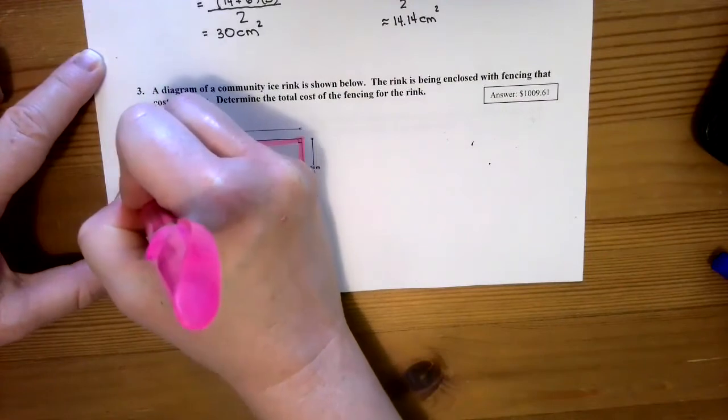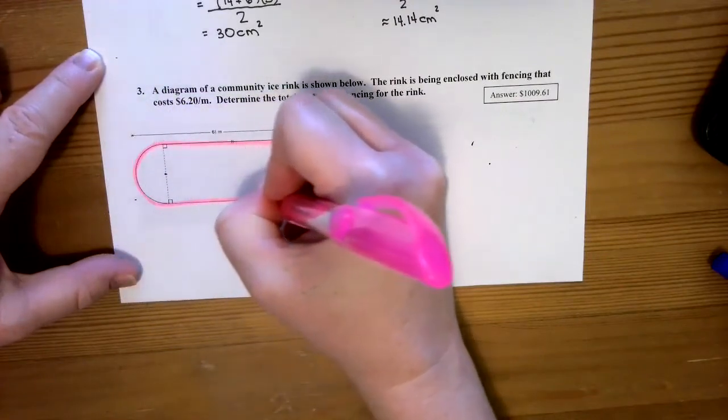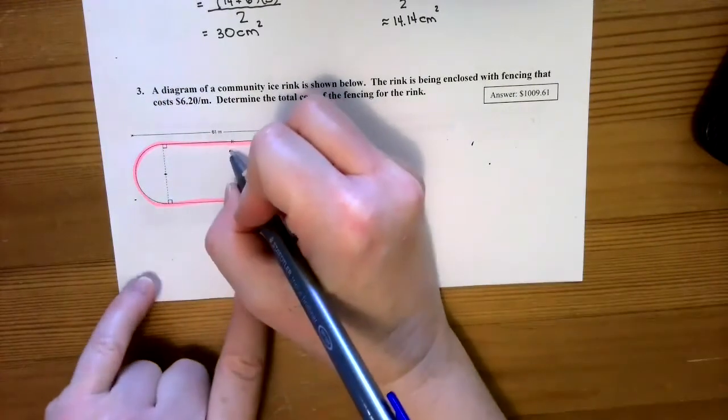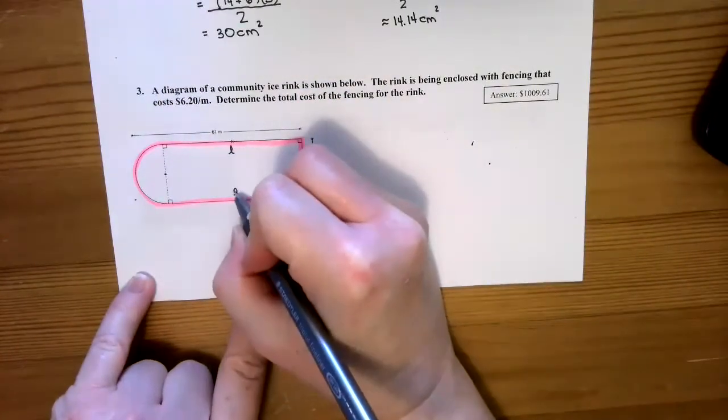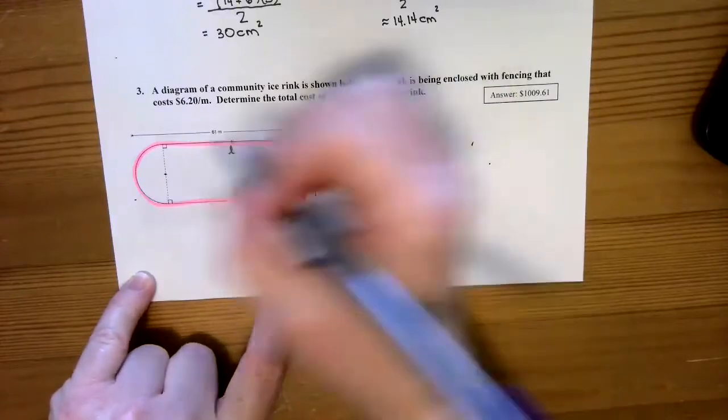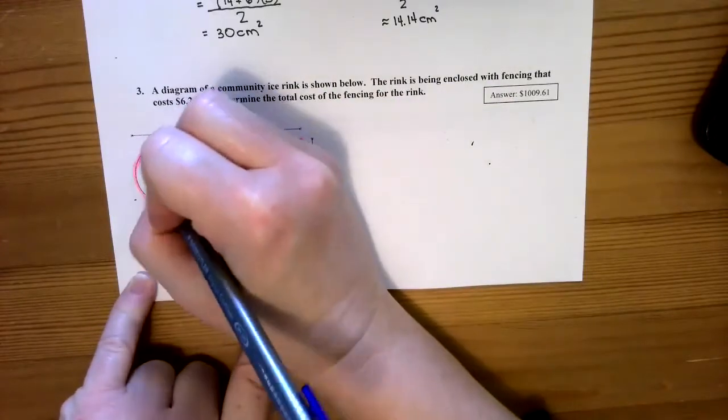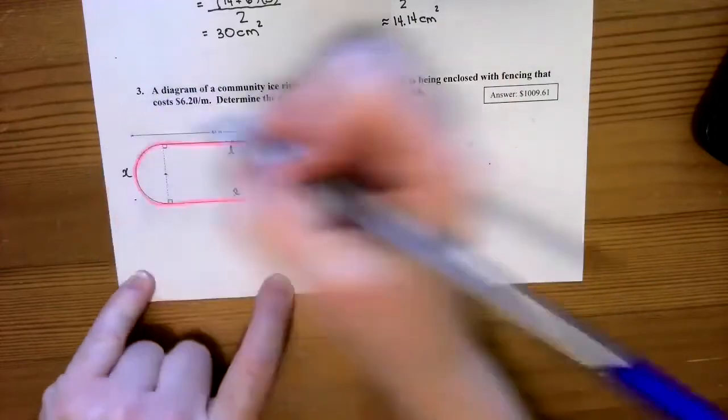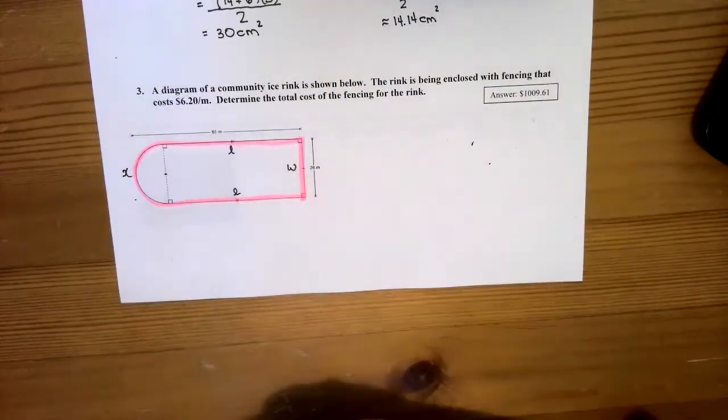You need to find the perimeter of the outside of the rink so that you can figure out the cost. In this case, you're going to need to know this length here, this length here, this width here, and then this length here—let's call it x. So you've got x, your lengths, and your widths.